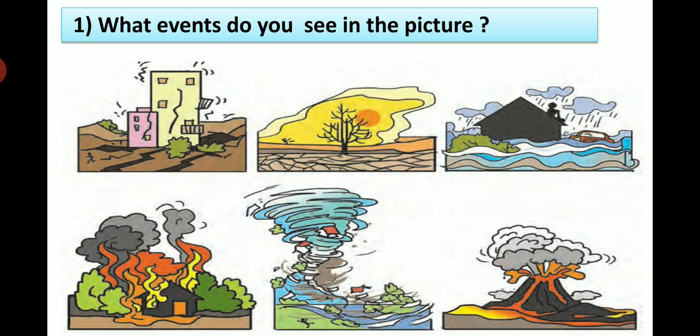See this picture. What events do you see in the picture? We can see disasters like earthquake, famine, floods, fire, storms, and volcanic eruption in this picture. We also read some news related to these disasters in the newspaper.